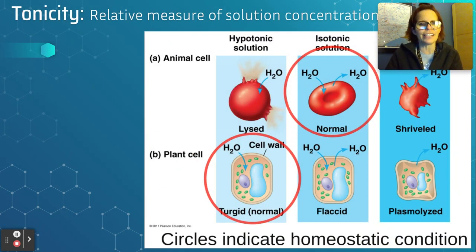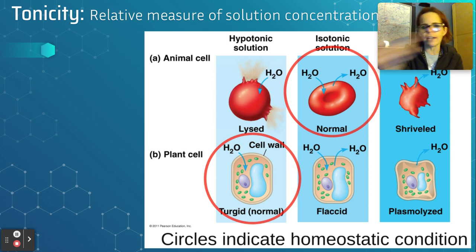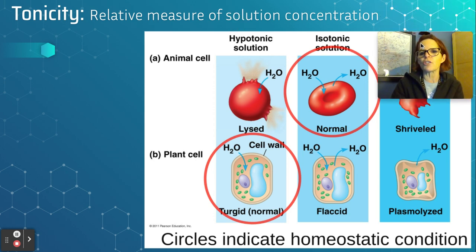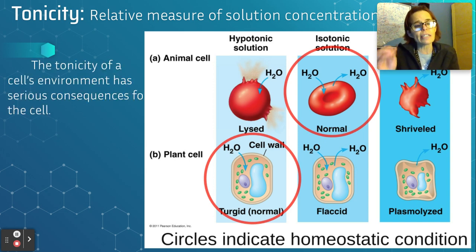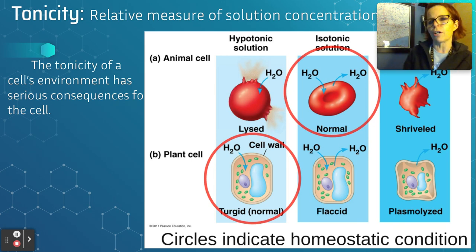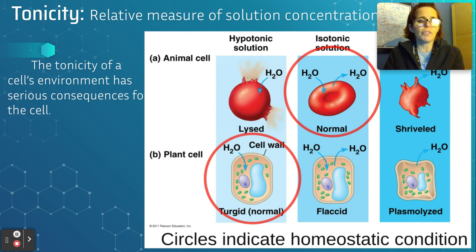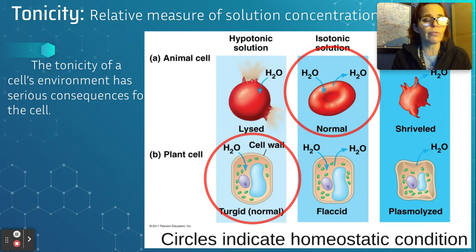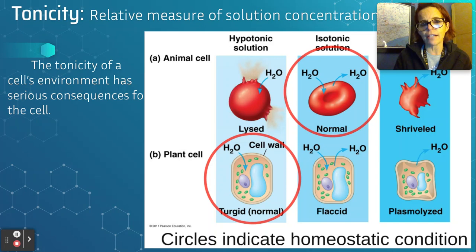Next is tonicity — a super important concept. If I were you, I would draw this entire diagram with every single label. Tonicity is just the relative measure of solution concentration. The tonicity of a cell's environment has serious consequences for the cell. If the concentration of water is wrong, it could cause a cell to swell and burst, cause a cell to shrivel up, or cause a cell to work really efficiently — it just depends on the concentration of water outside that cell.